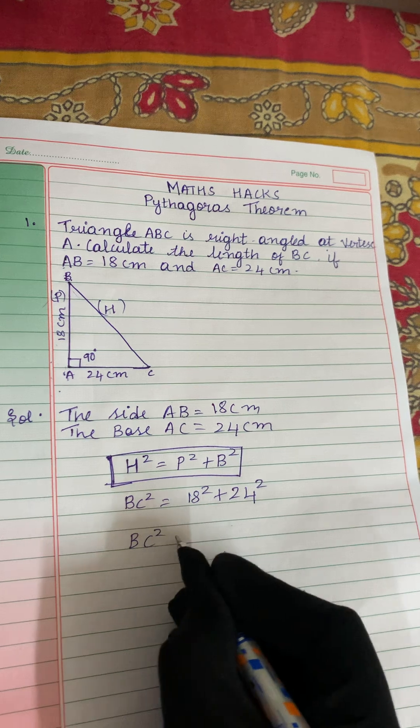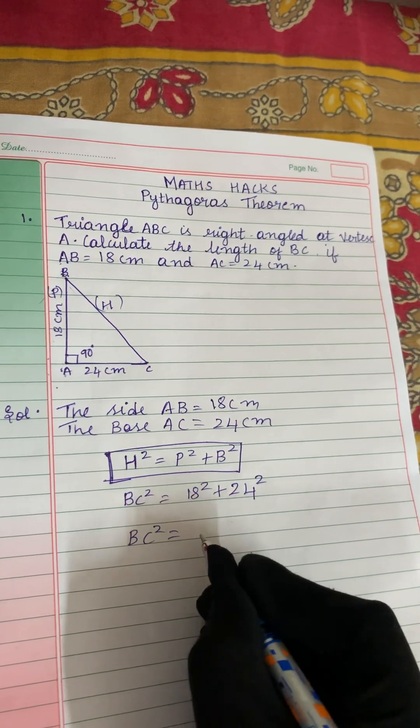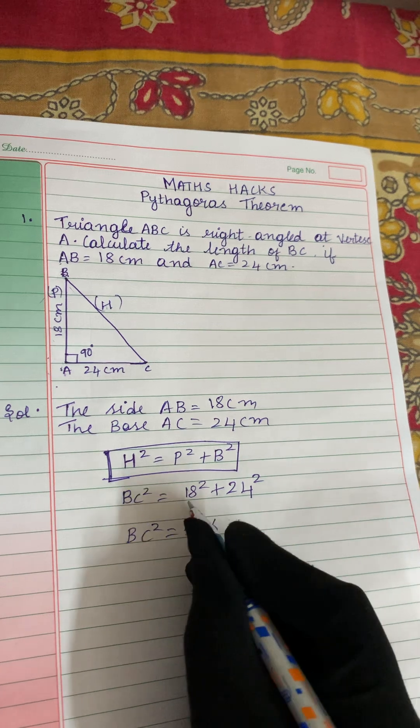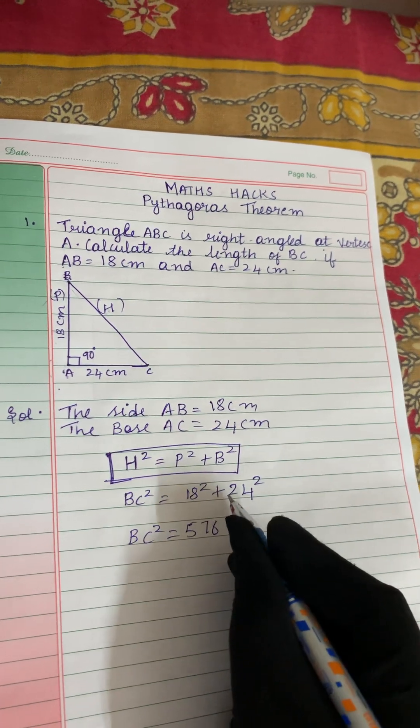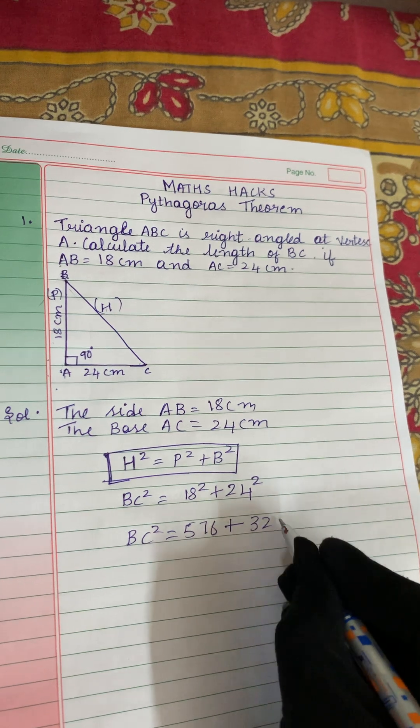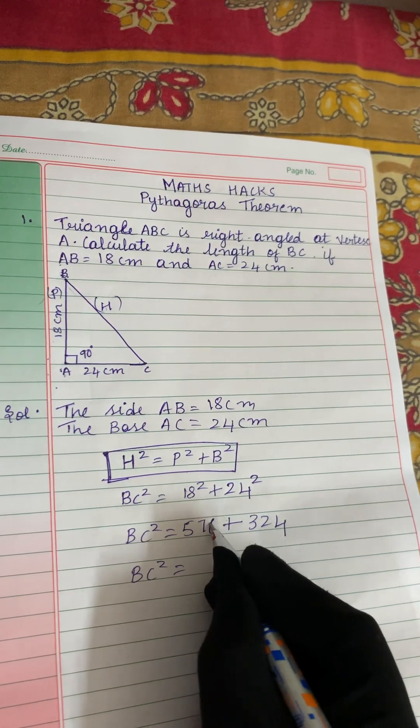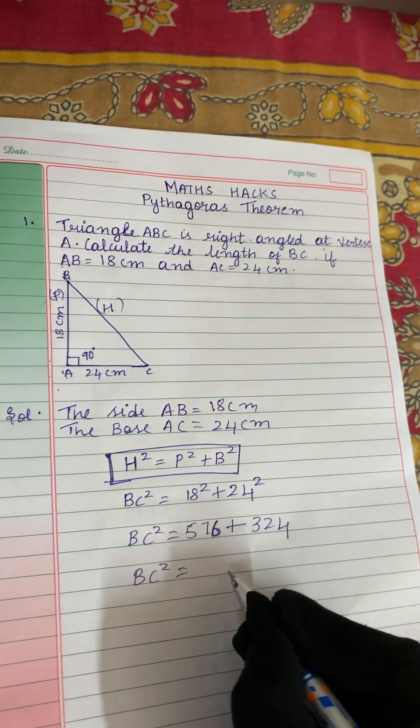Now BC² equals 18². What is the square of 18? 576. If you multiply 18 twice, we will get 576. 24², if you multiply 24 twice, we will get 324. Now we will add this: 576 plus 324 gives you 900.